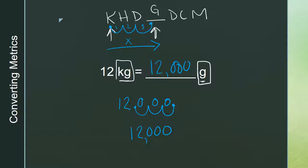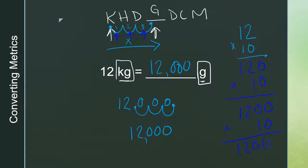One thing to remember is that when the decimal is moving, we're actually doing math. Moving to the right means multiplying by 10. For instance, 12 times 10 for the first hop gives 120; multiply by 10 again for the second hop gives 1,200; multiply by 10 the third hop gives 12,000 — the same answer. When you're moving to the left, your number gets smaller because you're dividing by 10 each time. So it's not just moving the decimal — the math behind it is multiplying or dividing by 10.